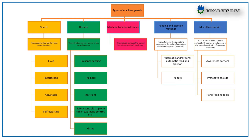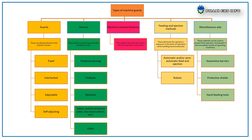Machine location and distance: this method removes the hazard from the operator's work area. Feeding and ejection methods eliminate the operator's exposure to the point of operation; types include automatic and semi-automatic feed and ejection methods, and robots. Miscellaneous aids can be used to protect both the operator and people in the immediate vicinity of operating machinery; examples include awareness barriers, protective shields, and hand feeding tools.